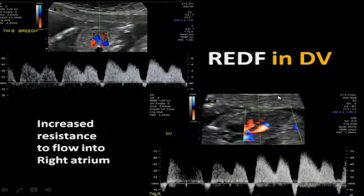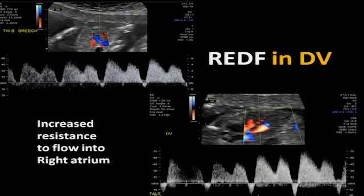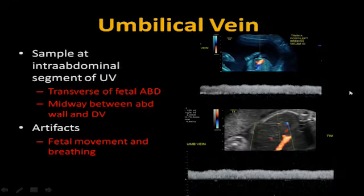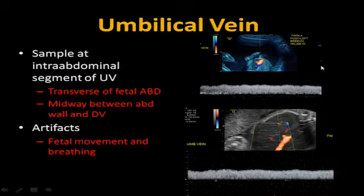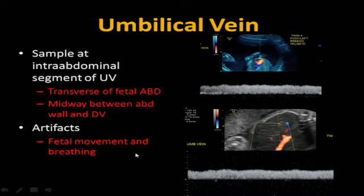Reverse end diastolic flow in the ductus reflects increased resistance to flow in the right atrium — that's where the ductus dumps into. It's one of the first Doppler waveforms to let us know the heart is starting to run into trouble. For the umbilical vein, they now say the best way to sample it is the first couple centimeters entering into the abdomen — sample at the intra-abdominal segment, midway between the abdominal wall and the ductus venosus. Artifacts come from movement and fetal breathing, so you must wait for fetal apnea, otherwise you can make it look like there are pulsations when it's just fetal breathing.